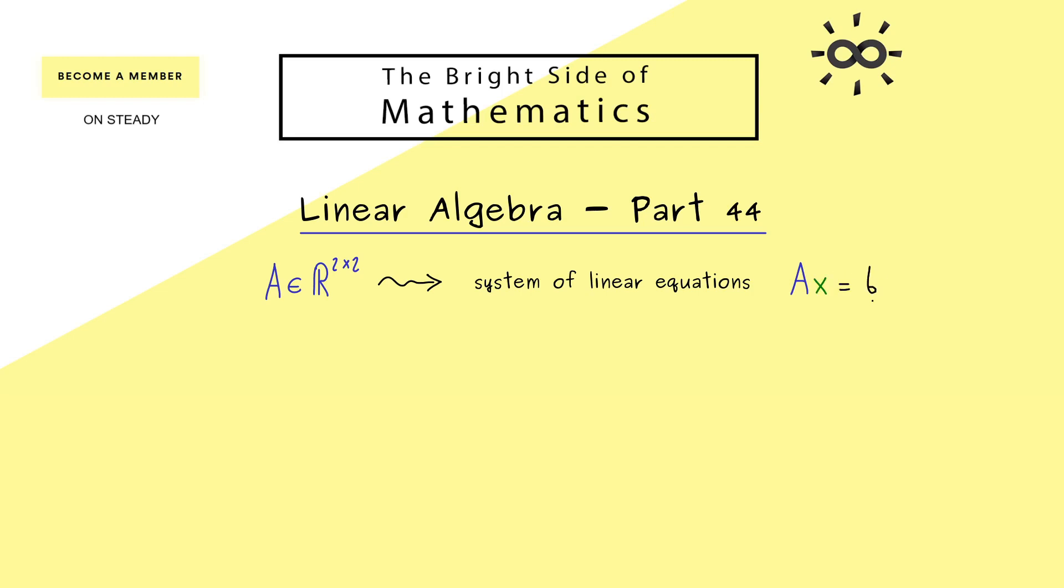Hence in this case we have a two-dimensional vector x and a two-dimensional vector b. Moreover, you also know we can shorten that with a matrix notation where we have a right-hand side. So there we have b and on the left-hand side we have the entries of the matrix A: a₁₁, a₁₂, a₂₁, and a₂₂.